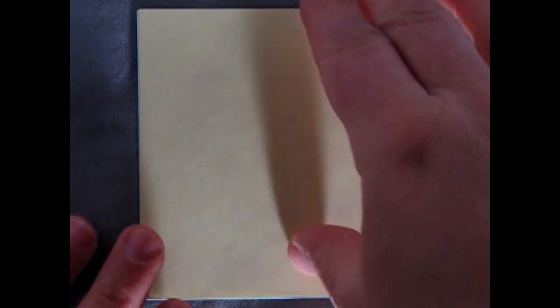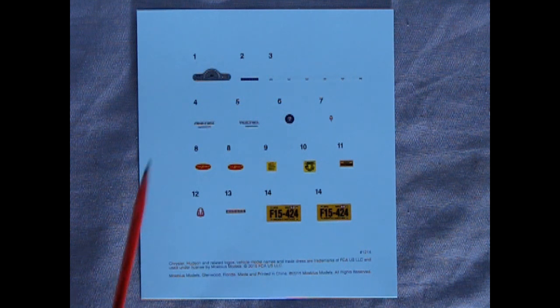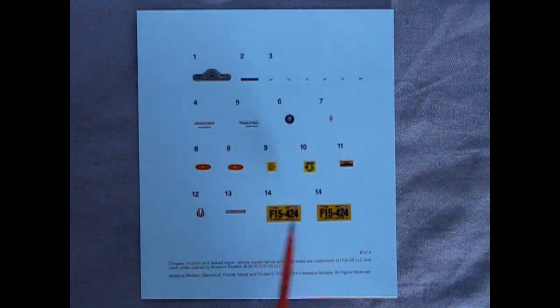Finally we have our decal sheet and if you peel off the paper you can see the amazing items on here. We have our instrument panel, all the little emblems, as well as our license plates.